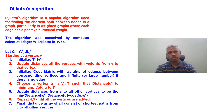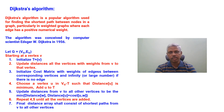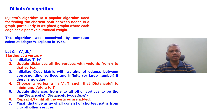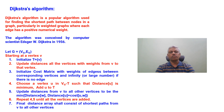Welcome to the lecture series on data structures. In this lecture we will talk about Dijkstra's algorithm. This algorithm is used to identify the shortest path between any pair of vertices in a given graph G = (V, E), where every edge is attached with a weight in terms of distance. This algorithm was conceived by Professor Edgar W. Dijkstra, computer scientist, in 1956.